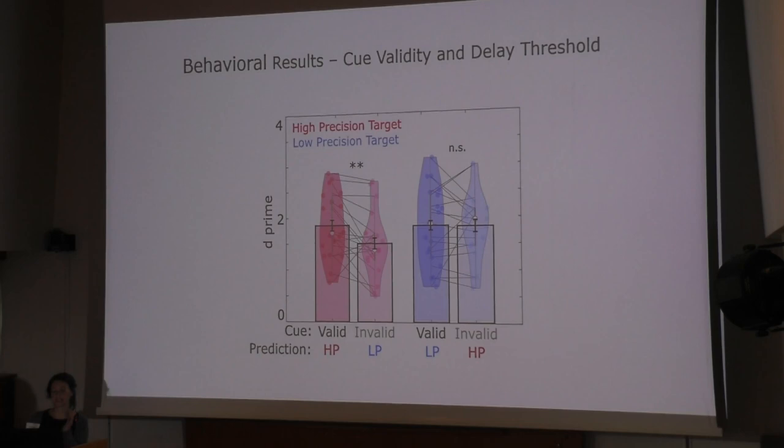If the listener actually expects a low precision sound but the actual presented target was a high precision sound, then the delay detection performance decreases.